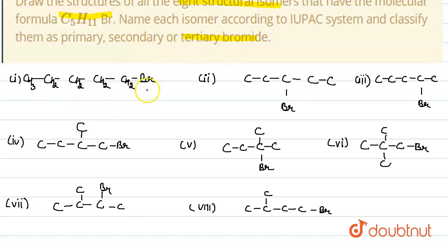So here bromine is attached to the carbon which is further attached to only one carbon. That's why it is primary bromide. And the name of this compound is 1-bromo-pentane.